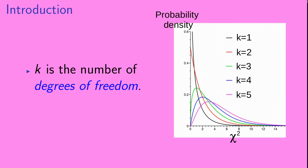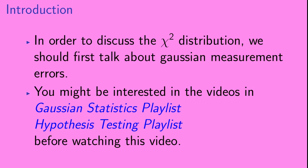k is what is called the number of degrees of freedom. In order to discuss the Chi-Squared Distribution, we should first talk about Gaussian measurement errors. You might be interested in checking out the videos in the Gaussian Statistics playlist and the Hypothesis Testing playlist available on this channel before you watch this video.